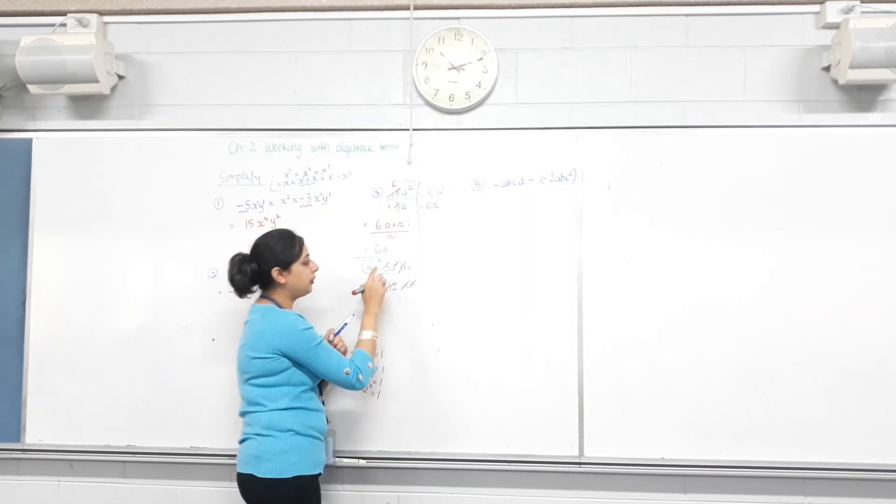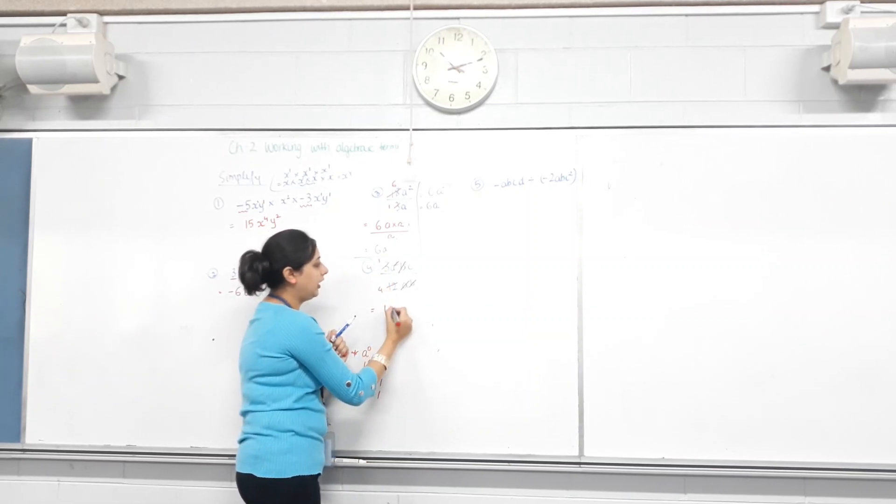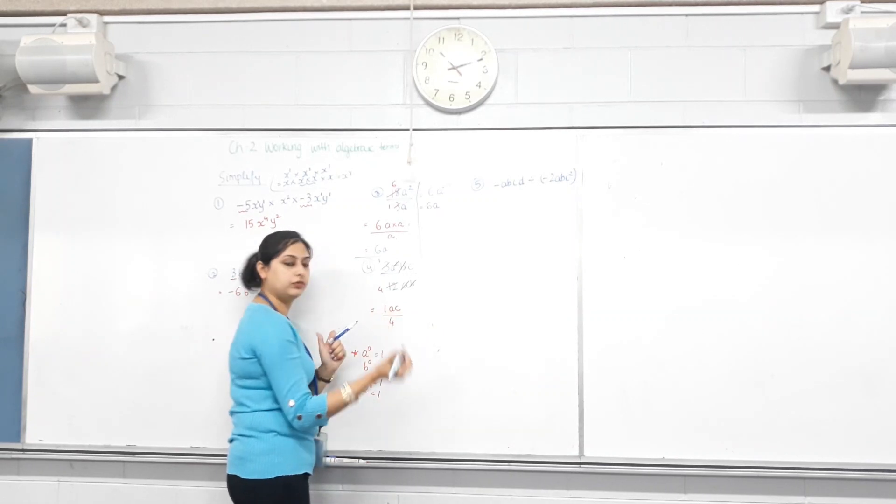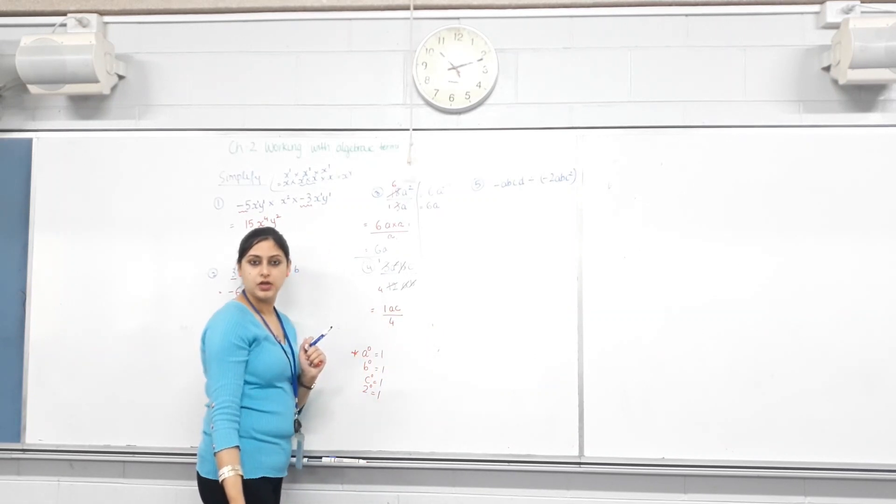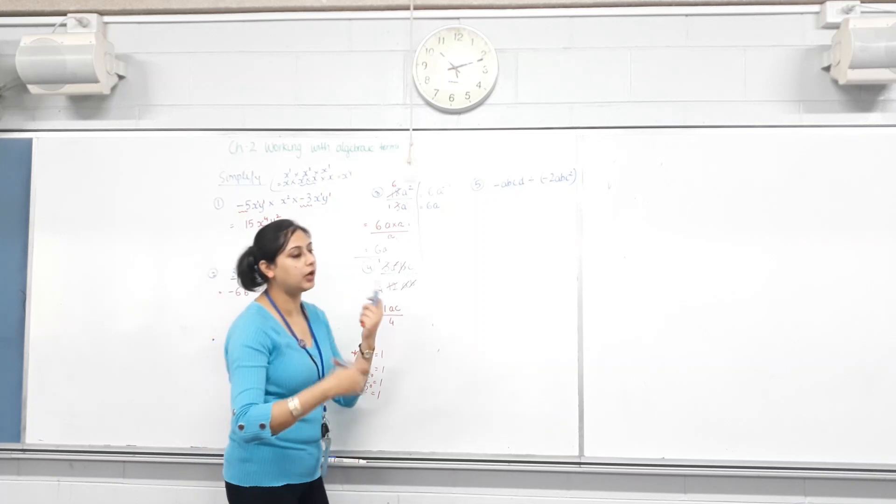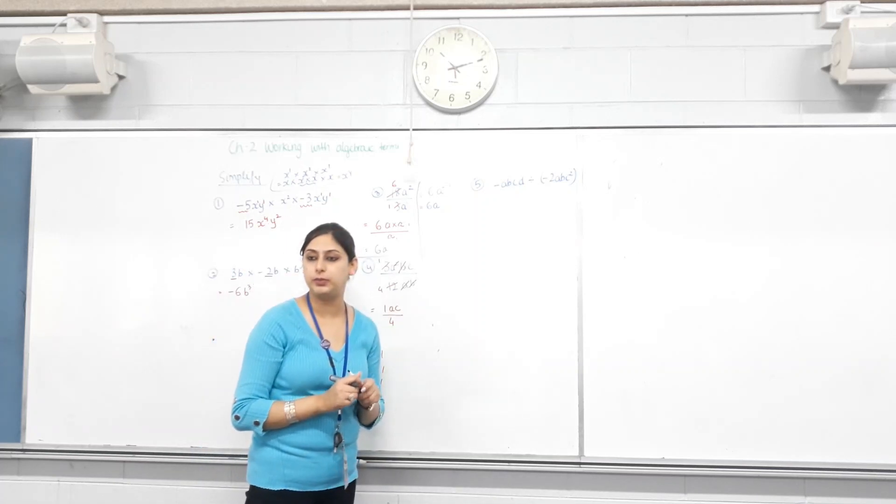So, you can write it as - what remains in the numerator? 1, A, C, and at the bottom there is 4. So, you can kind of do this without thinking about the index law and why that happens.